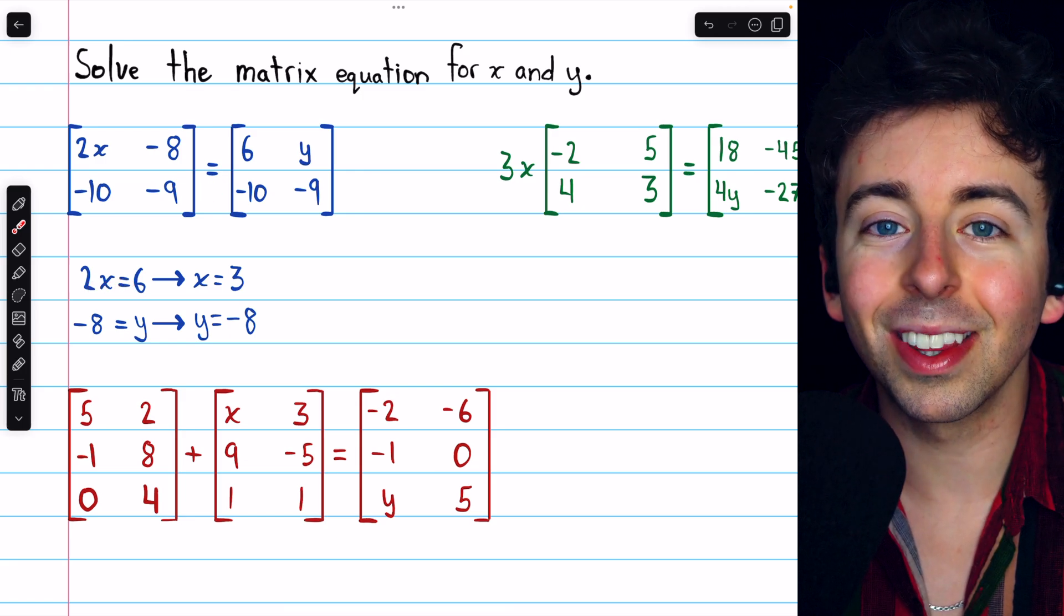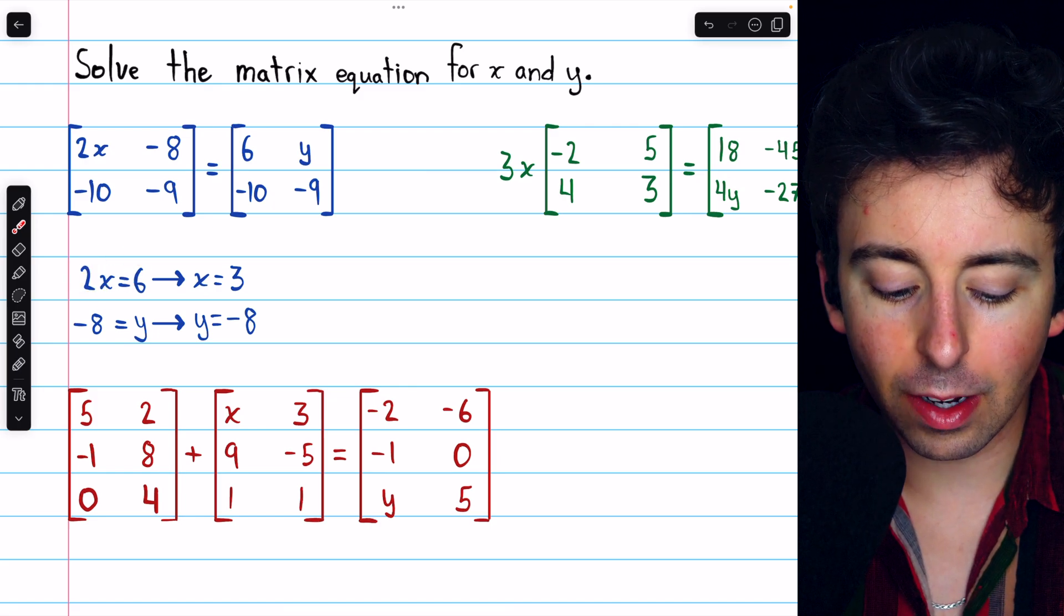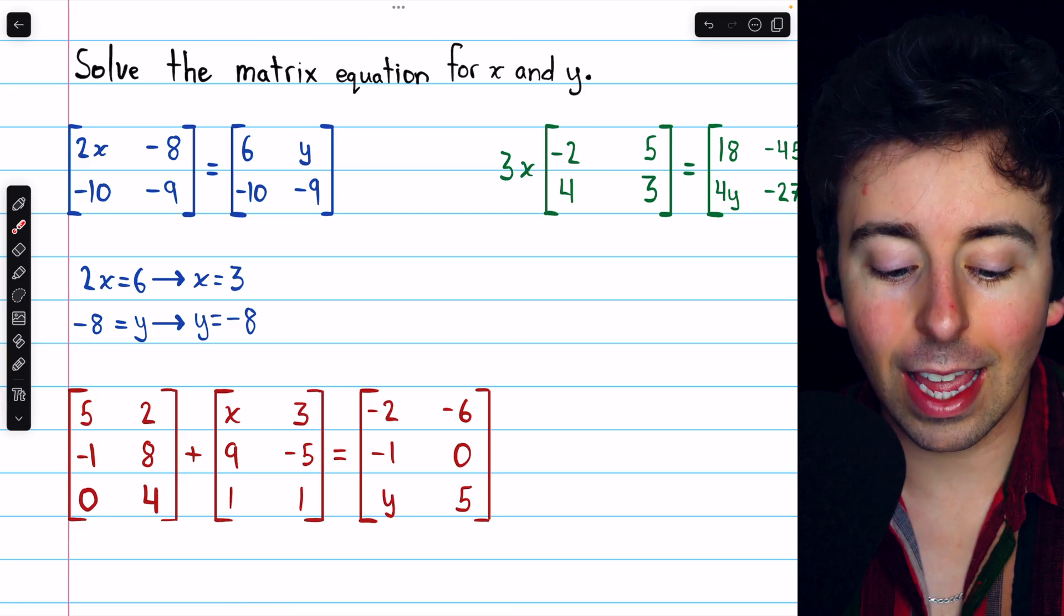In order for this equation to hold, that has to be true. If 2x equals 6, then dividing both sides by 2, we get that x equals 3.